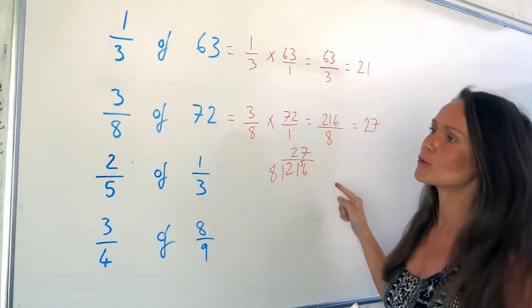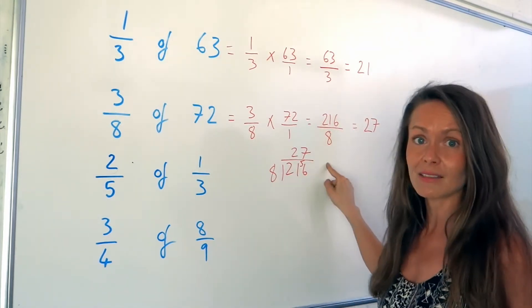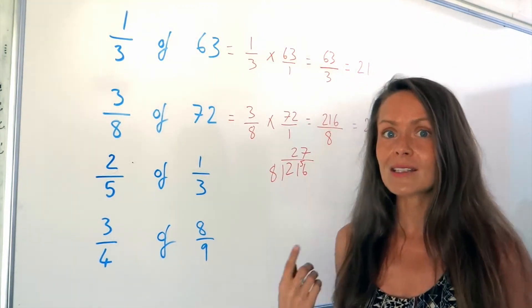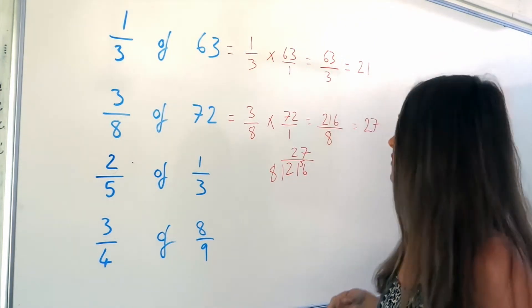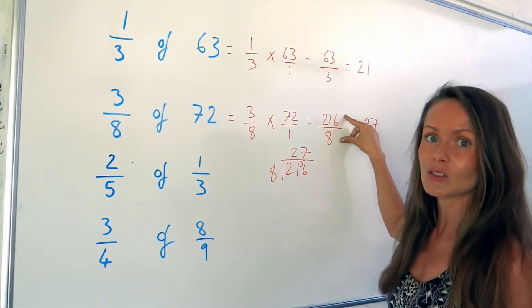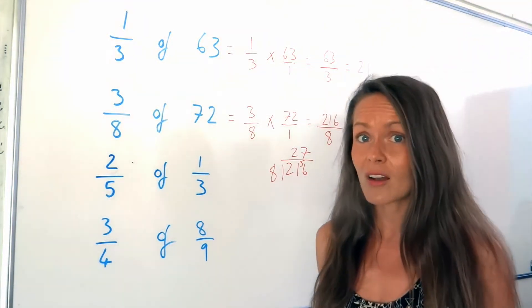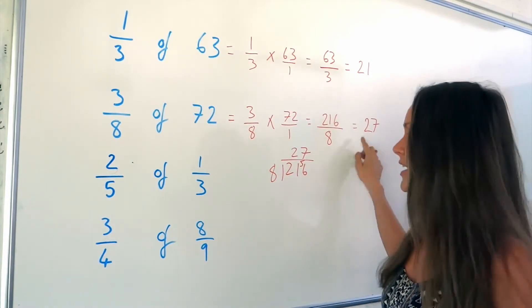But if you don't know your 8 times table up to this number, and you can't spot that it's exactly divisible by 8, don't panic. All you need to do is simplify this fraction until you can't simplify any more. So you might just decide to divide both of these numbers by 2, and then by 2 again, and keep simplifying until you can't any more. And you should arrive at exactly the same answer.